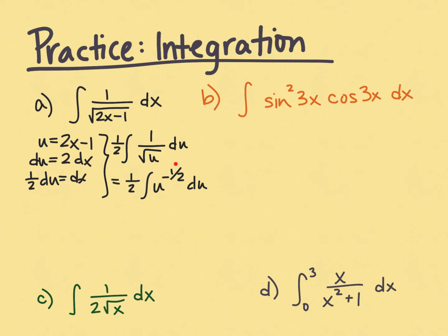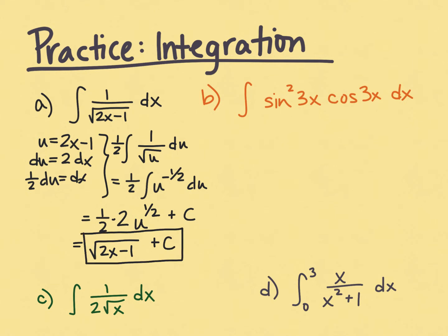Using the power rule: add 1 to the exponent to get positive one half, and divide by one half — which means multiply by 2. Plus c for an indefinite integral. Back substituting, we replace u with 2x minus 1, so we get the square root of 2x minus 1 plus c. If you take the derivative of this you should get back to your original integrand — that's a good way to check.